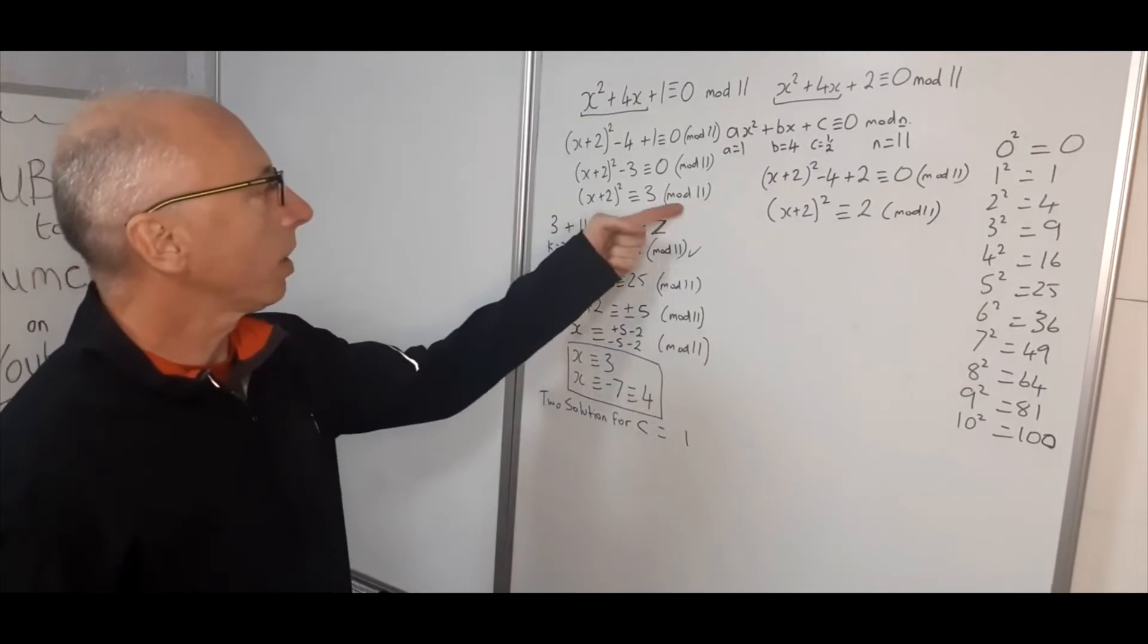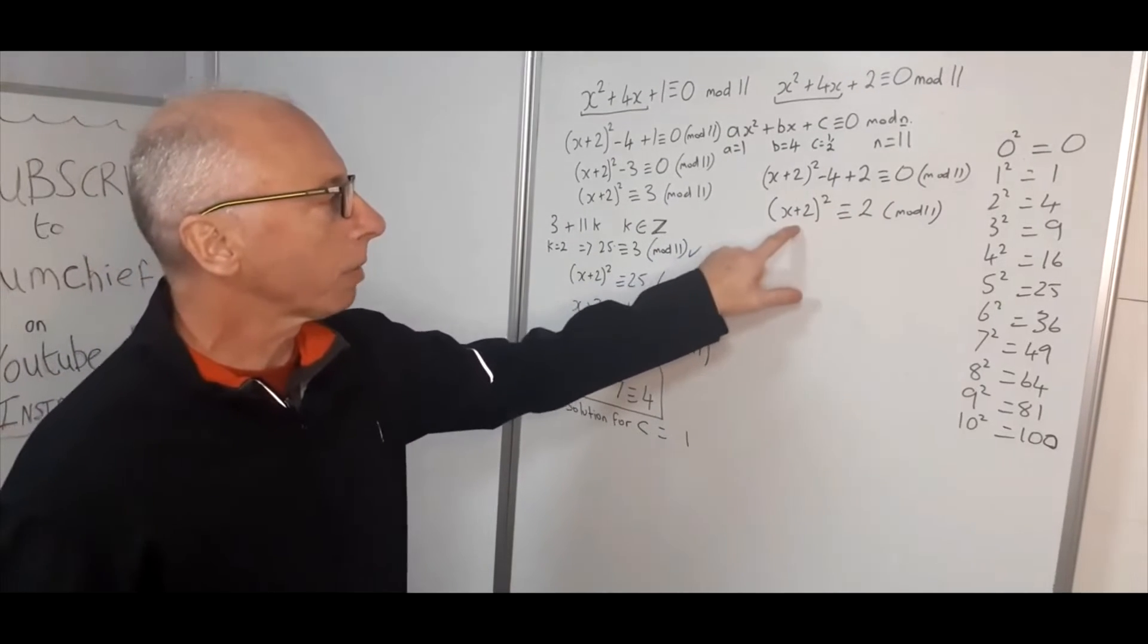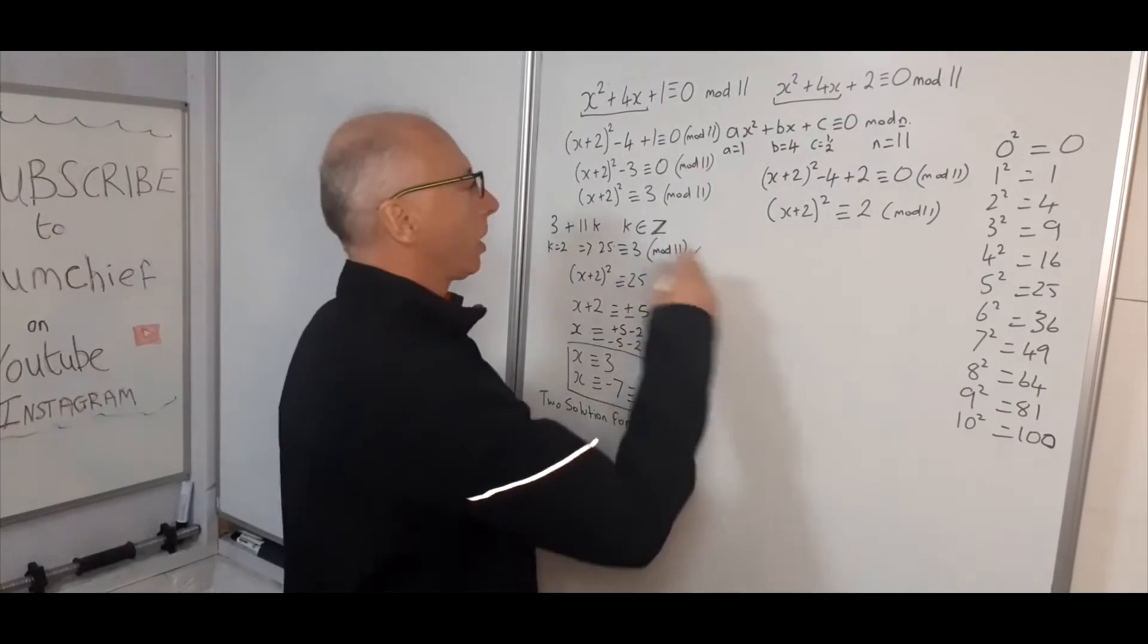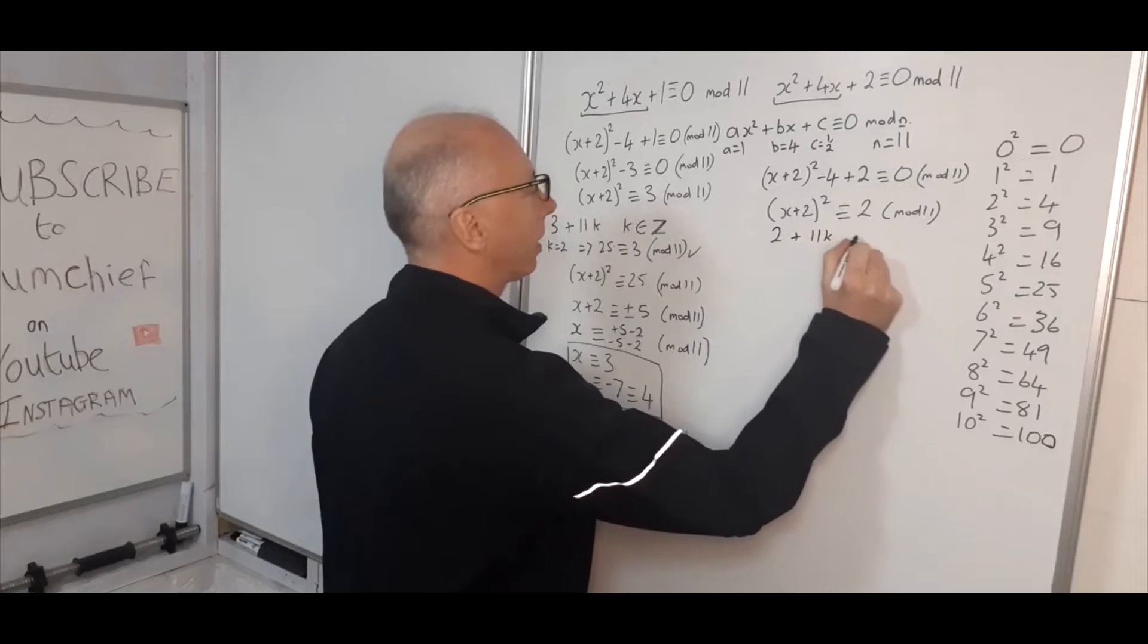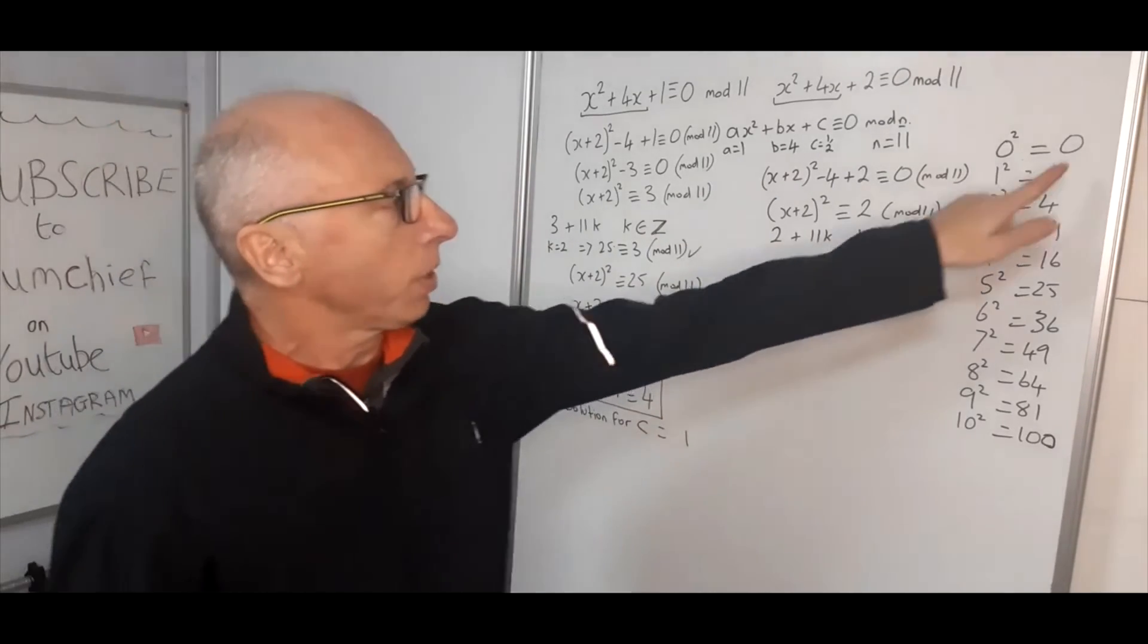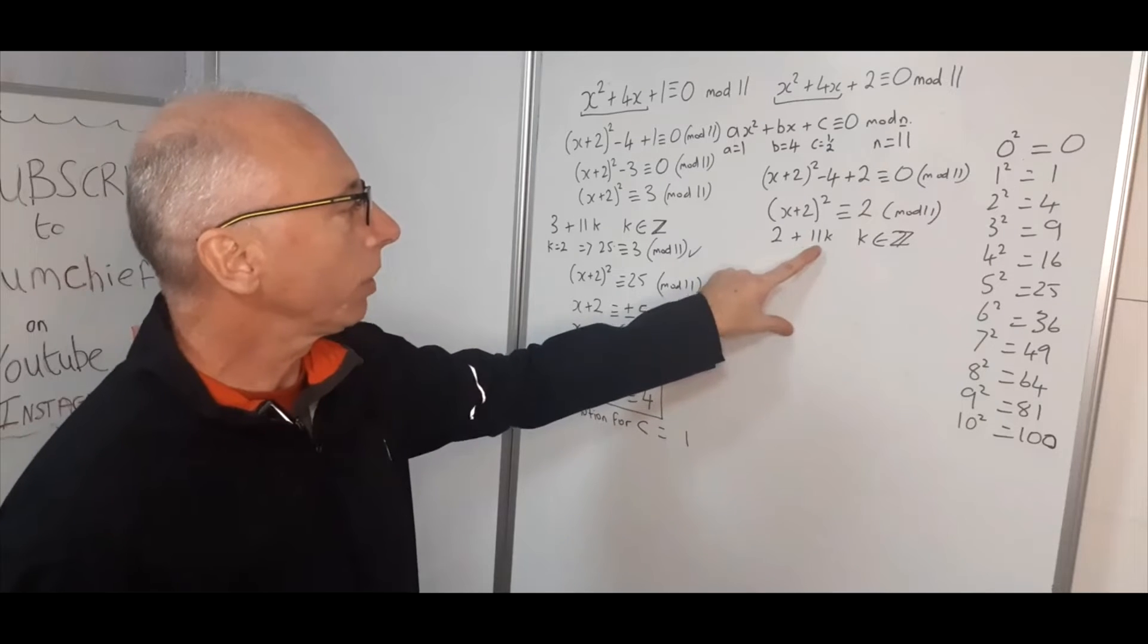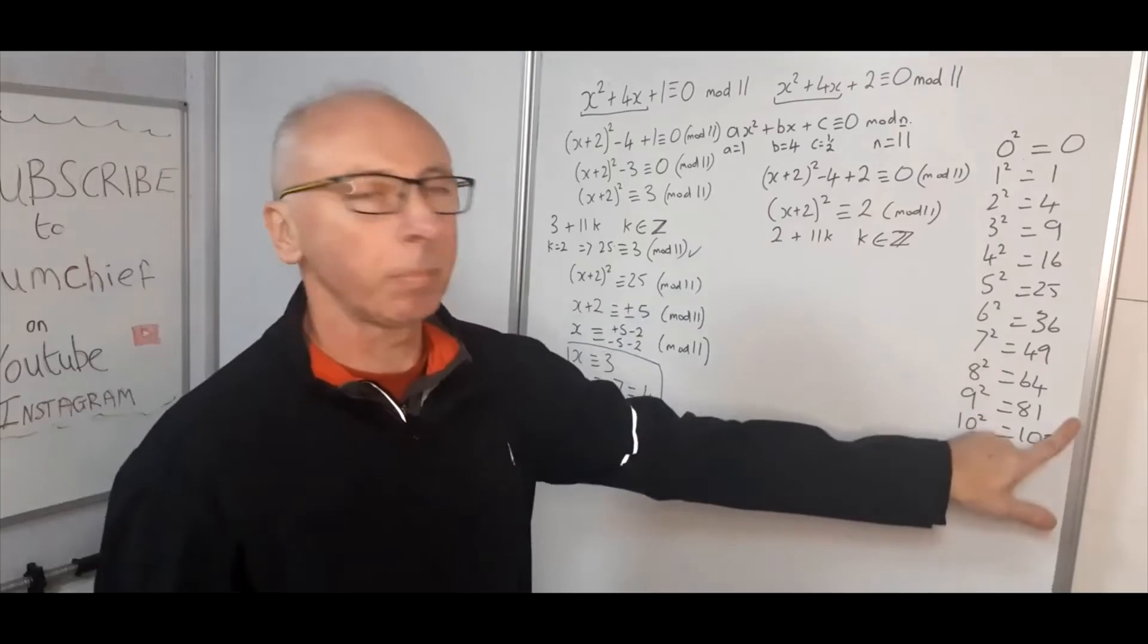Okay, so as we were with this side, take square root of this side, no problem, to get to x plus 2, square root of this one, it's going to give us a problem. So as we were here, we're now looking for 2 plus 11k, where k is an integer as it was here. So we need to go through this table here and see if there's any numbers we can find that match this criteria of 2 plus 11k to give us a perfect square.